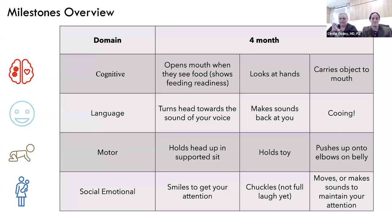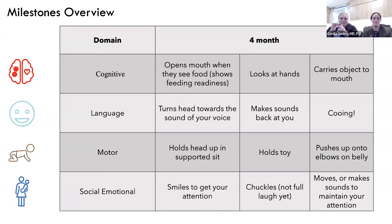At four months, babies find their hands. Before, if you put a toy in their hand they'd hold it but keep looking at you; now they'll look at the toy and realize, 'Oh, I have hands!' They can stare at them endlessly. Carrying objects to the mouth is also important — not a concern, but actually a milestone. Kids need to stick toys in their mouths to explore; that hand-to-mouth-to-hand transfer is an important milestone to look for.